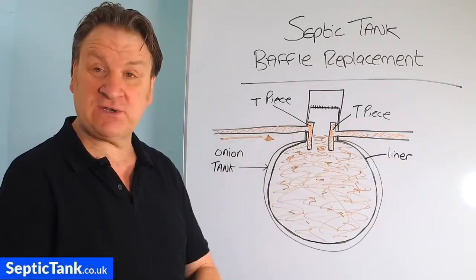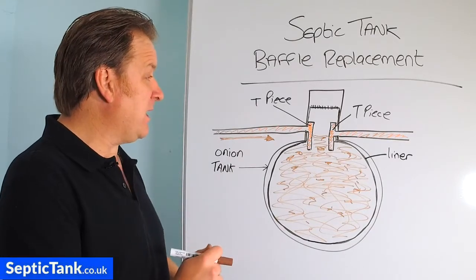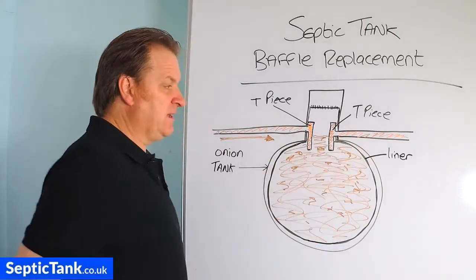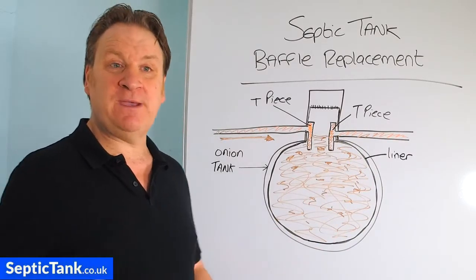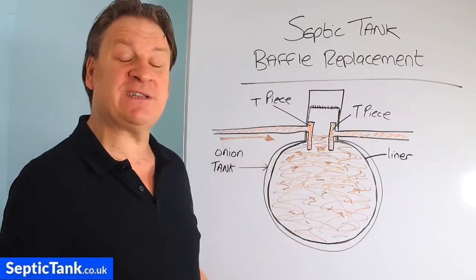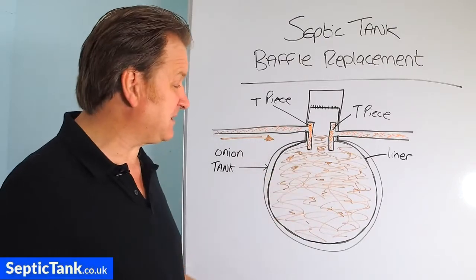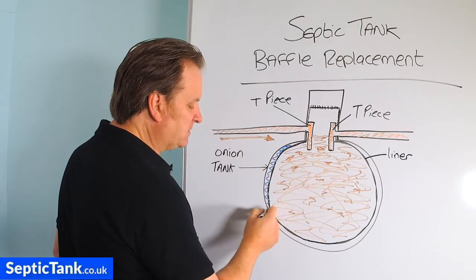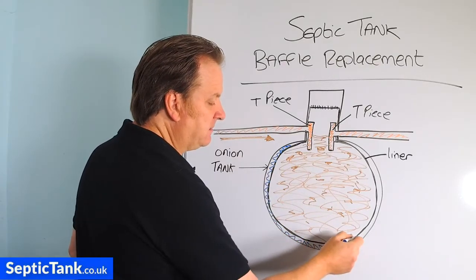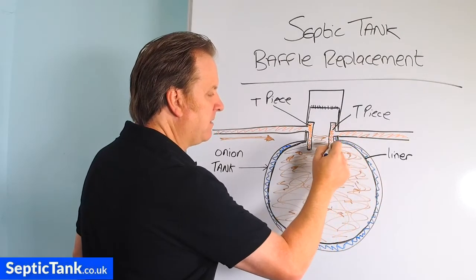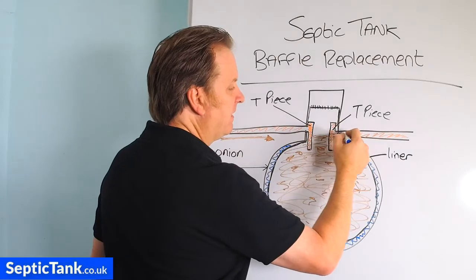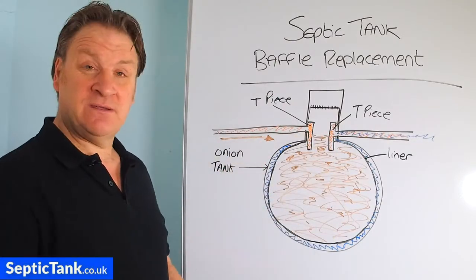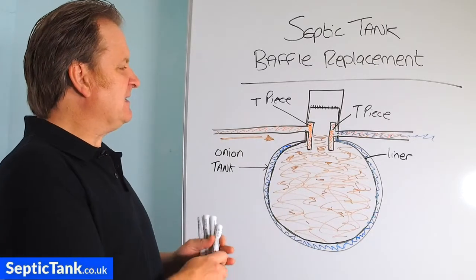If all that came straight into the tank and floated straight out into the soak away, it would block and clog the soak away up. So to prevent that, they put into the tank what's called a baffle. This black liner in the onion tank is a classic example of a baffle. A baffle is basically a partition, a divide, or a separator that separates the liquid from the solids. The wastewater swirls around inside, and through this baffle it gets separated — the liquid goes on the inside of the liner, comes up, enters the outlet pipe, and is discharged into the soak away.